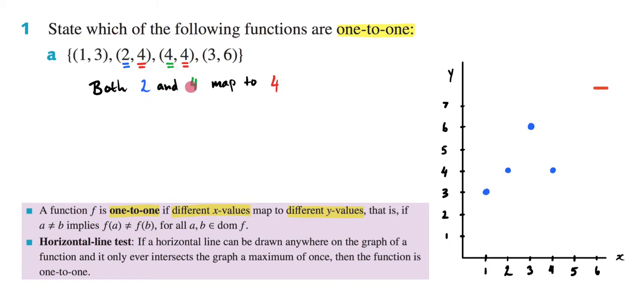So it's quite clear that both 2 and 4 map to 4. And this violates my definition of what a one-to-one function is. If it was one-to-one, different x values would map to different y values. But as you can see here, I have different x values mapping to the same y value. So I'm going to say that this is not a one-to-one function.